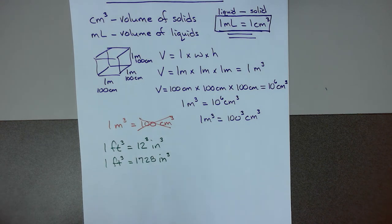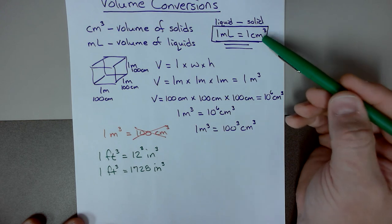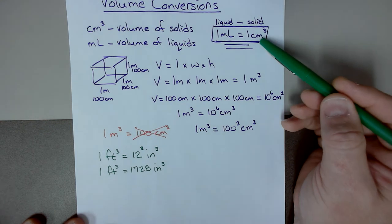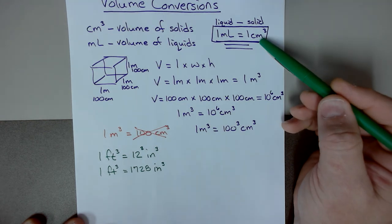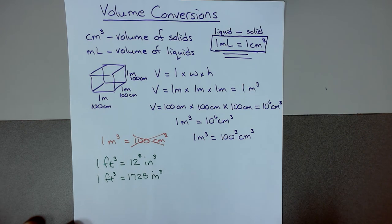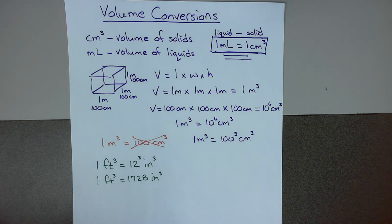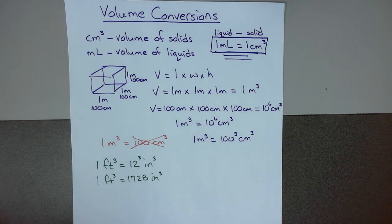When you have a volume of solids, you can convert it to a volume of liquids using the fact that one cubic centimeter equals one milliliter. It's important to understand this idea of cubic units in volume conversion. That will be the end of this video — thank you.